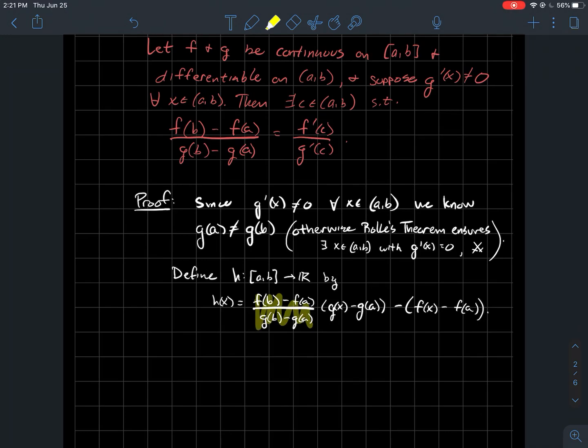f of b minus f of a over g of b minus g of a. A lot of letters going on here, just keep track of x as the variable. So this is just some constant times g of x minus g of a. So again, g of a is some constant,